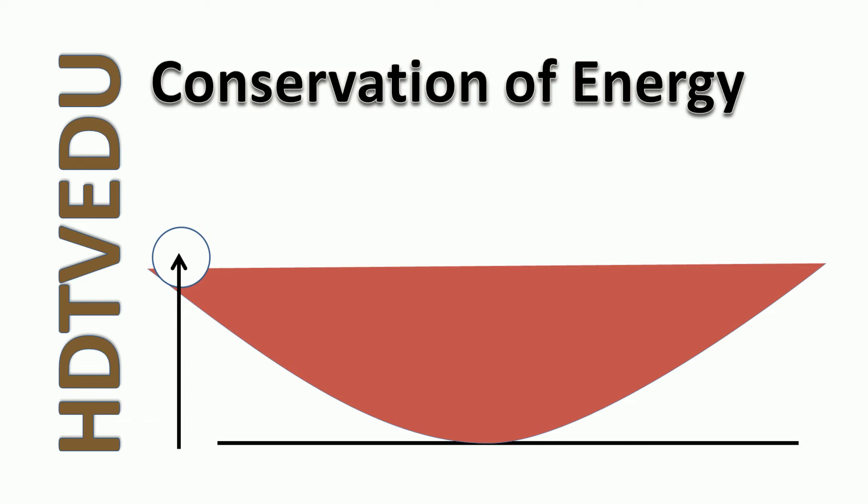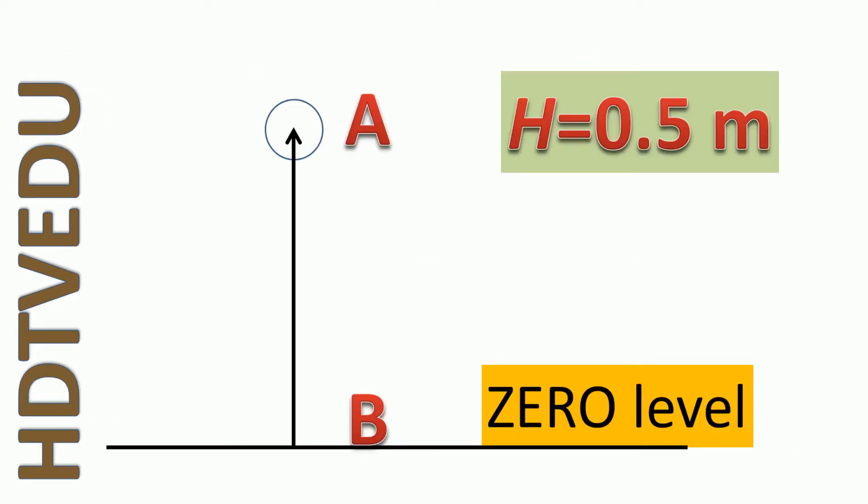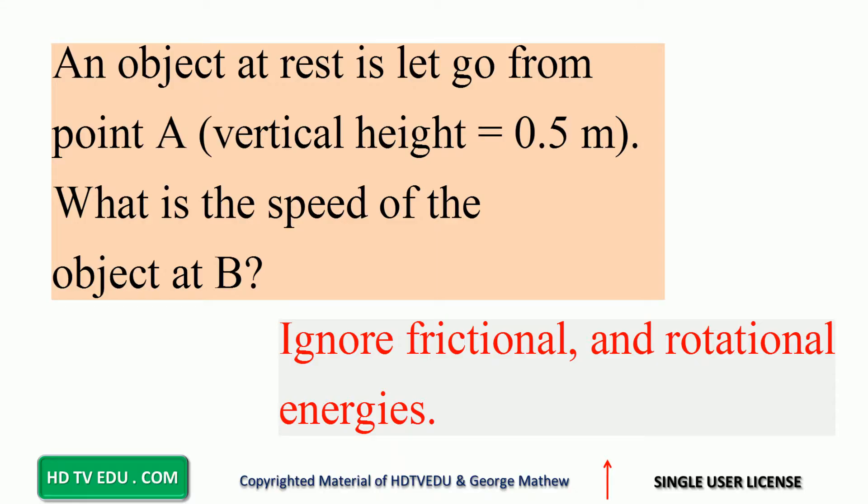Conservation of energy. We have a ball and the ball is let go from rest. Let's assume that it is let go from point A, a height of 0.5 meters. We have established the zero level at the lowest point at point B. An object at rest is let go from point A, vertical height 0.5 meters. What is the speed of the object at B?